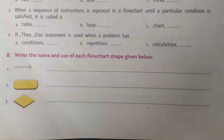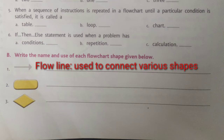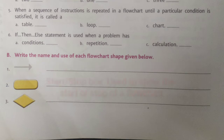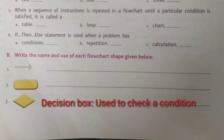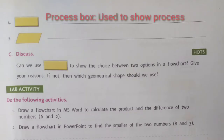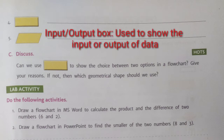Write the name and use of each flowchart shape given below. Five flowchart shapes are given — we need to write the name and use of each. The first shape is the flowline, used to connect various shapes in a flowchart. The second shape is the start or stop box, used to show the start and stop of a flowchart. The third shape is the decision box, used for checking a particular condition. The fourth shape is the process box, used to show the process or actions. The fifth shape is the input or output box, used to show the input or output of data.